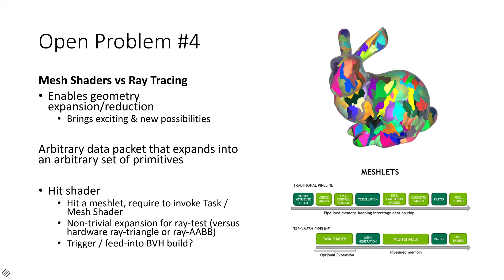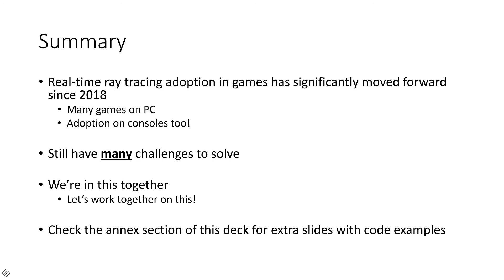Lastly, mesh shaders and ray tracing. Mesh shaders simplify the traditional rendering pipeline — replacing vertex, tessellation, and geometry shader stages with task shaders and mesh shaders. The challenge is that arbitrary data packets, or meshlets, can expand into an arbitrary set of primitives. In games with both mesh shaders and ray tracing, a hit shader that arbitrarily hits a meshlet would have to invoke a task or mesh shader — a non-trivial expansion for ray testing compared to hardware support for ray-triangle and ray-AABB. This sounds like quite the performance challenge, and perhaps there is a need for such an expansion to dynamically feed into the BVH builder.